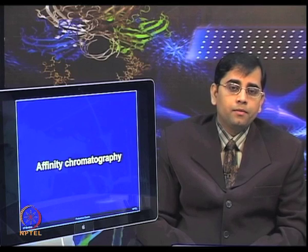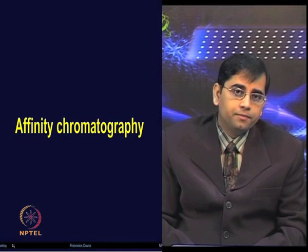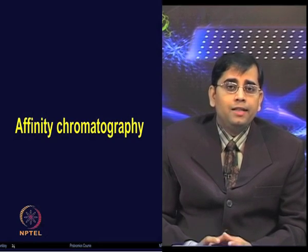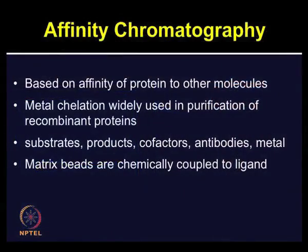Affinity chromatography is a desirable method for protein purification to homogeneity. Due to the selectivity of immune recognition, it is possible to purify a protein in a single step under favorable conditions. Affinity chromatography is based on the affinity of proteins to their ligands or other molecules. Metal chelation is widely used in purification of recombinant proteins; various substrates, products, cofactors, antibodies, or metals can show affinity for a given protein, and this is used as a strategy to purify proteins based on affinity.